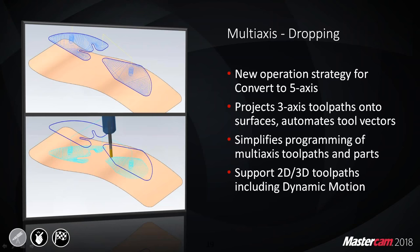Moving to multi-axis, a new function called multi-axis dropping has been added. It's a strategy that converts a three-axis toolpath to a five-axis toolpath by projecting a 2D or 3D toolpath onto a surface and automatically calculating the required five-axis motion. This simplifies five-axis programming and gives alternative strategies using dynamic motion for multi-axis machining.